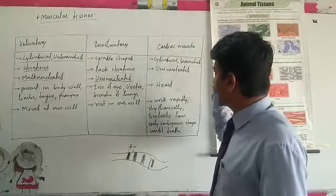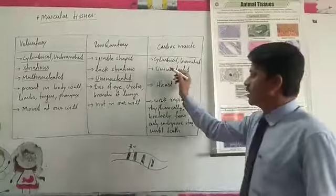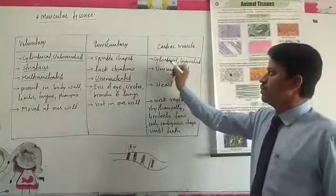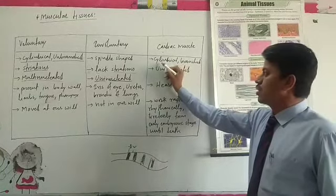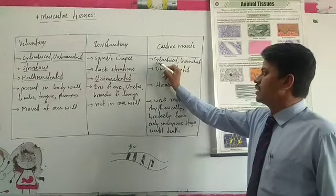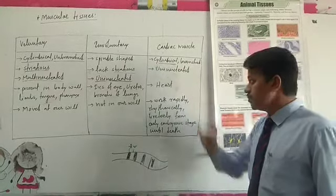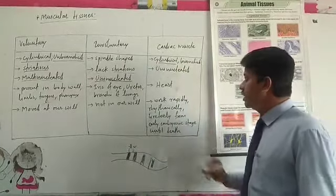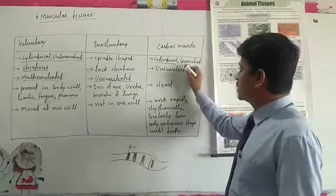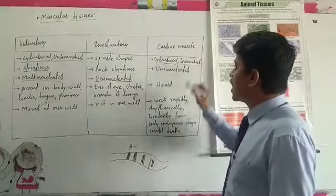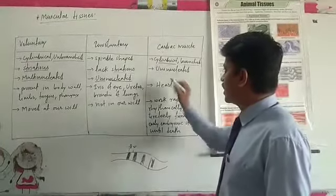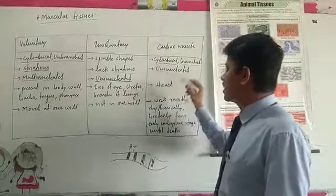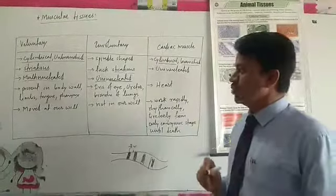Cardiac muscles have a cylindrical shape. They are branched, and they are also uninucleated.